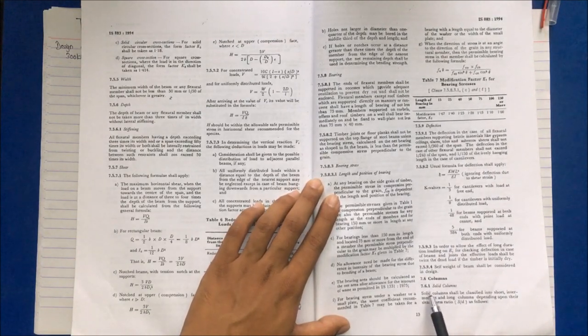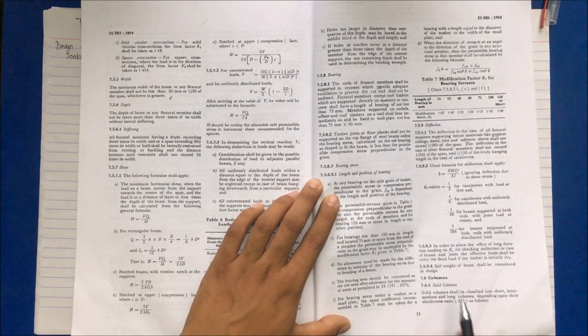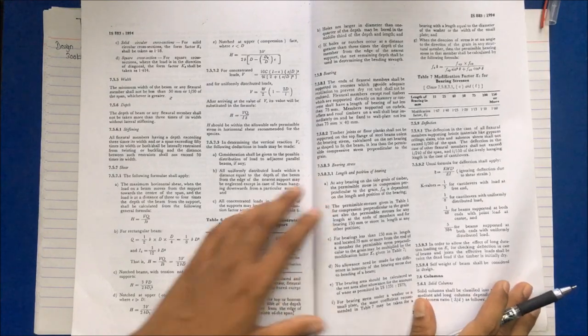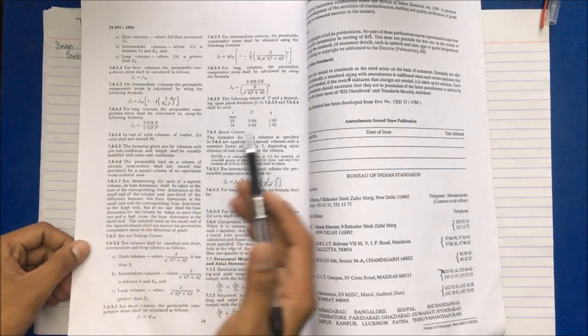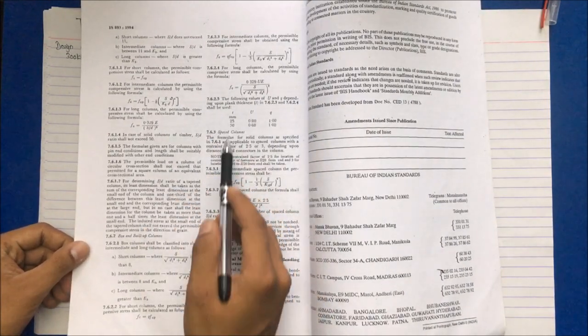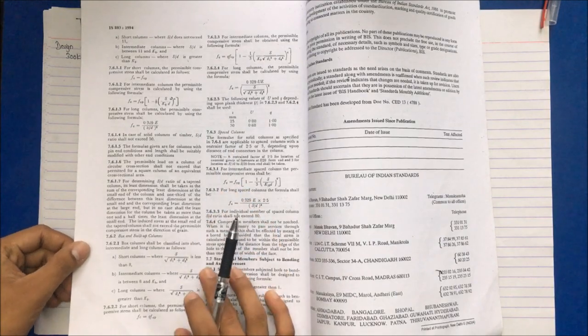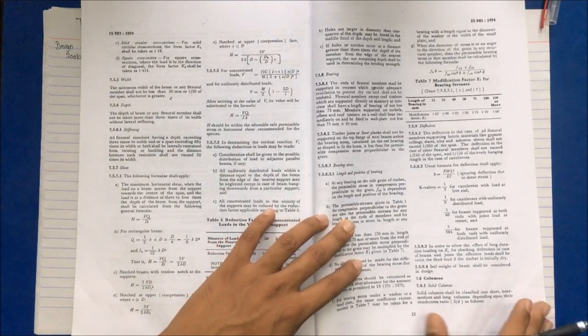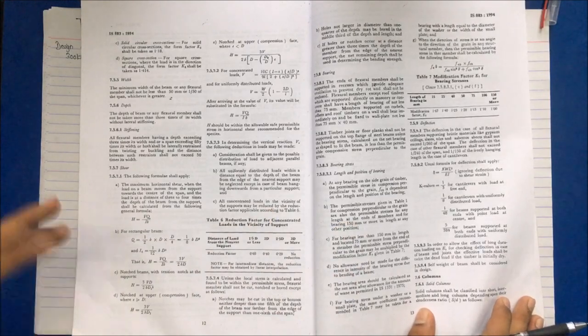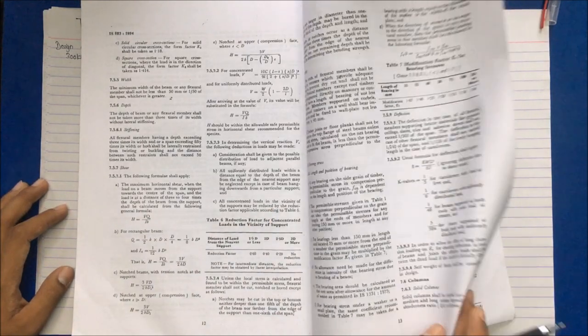There are three types of columns: solid column, built-up column or box column, and spaced column. Solid and spaced columns are similar in design procedure, but a new term is introduced in spaced columns.